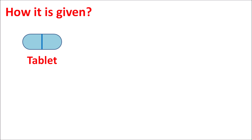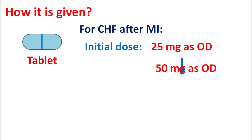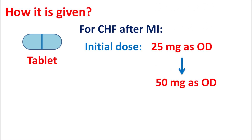Eplerinone is available as a tablet. The dose depends on the clinical indication. For patients with congestive heart failure after myocardial infarction, the drug is started at an initial dose of 25 mg once daily to reduce cardiac work and improve symptoms; the dose can be slowly escalated to 50 mg once daily within a period of four weeks. For the treatment of hypertension, the dose is 50 mg once daily.